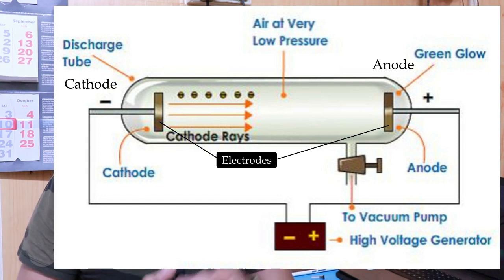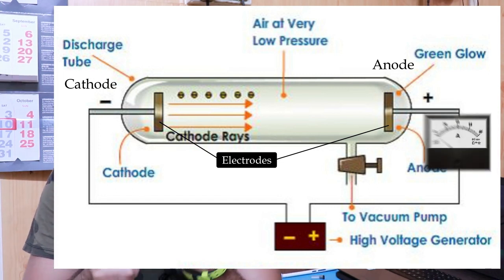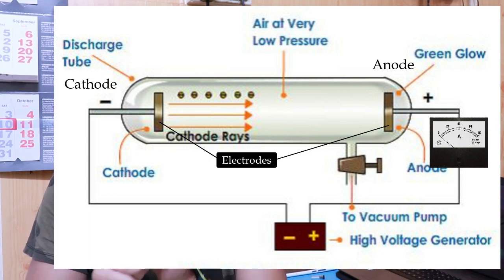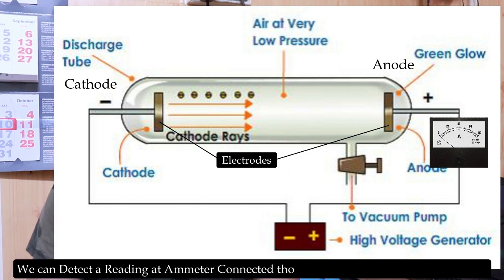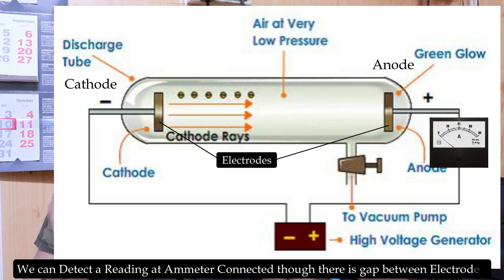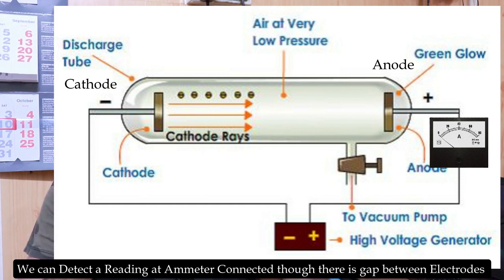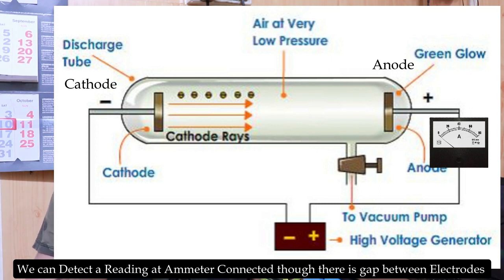When we connect an ammeter to the anode, a flow gets detected — the ammeter shows us a reading. But these two electrodes are far away from each other with no physical connection between them. Yet there is something which is flowing between the two electrodes.